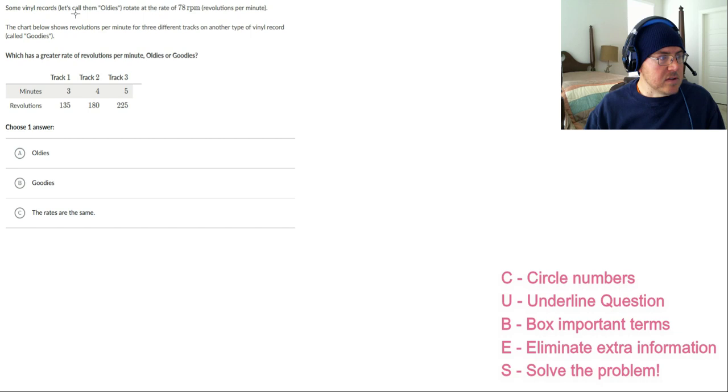Some vinyl records, let's call them oldies, rotate at the rate of 78 revolutions per minute. So let me cube this. I know that's not a one. I want to put some on the thread. So here we go. So I've got 78 revolutions per minute.